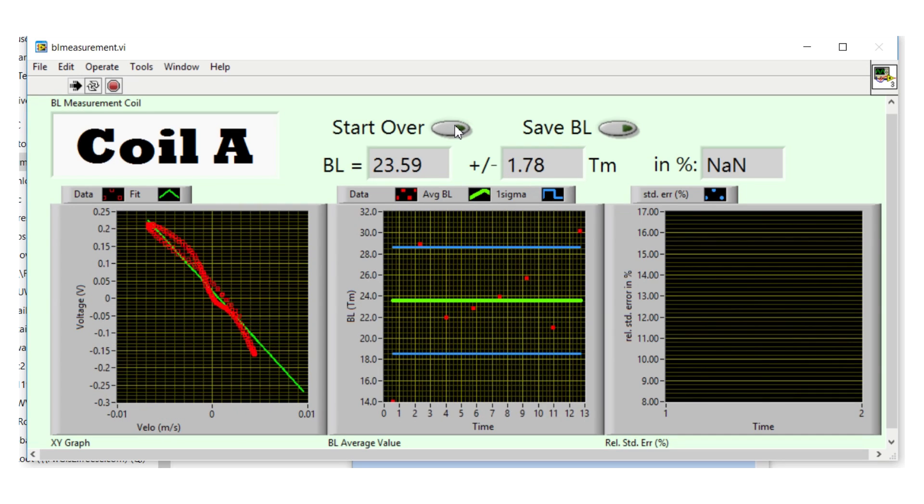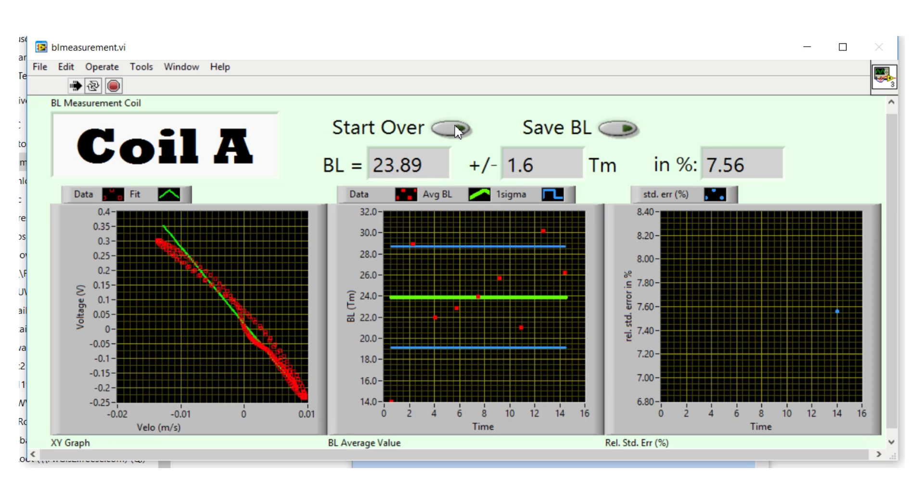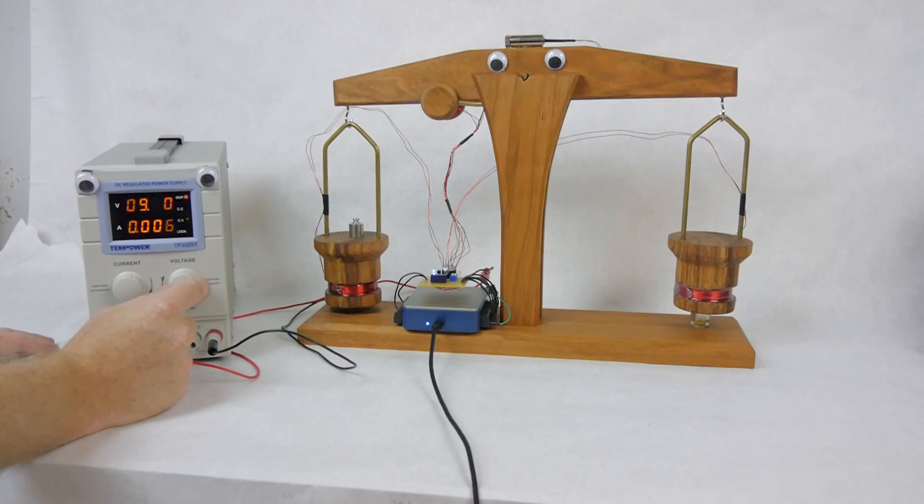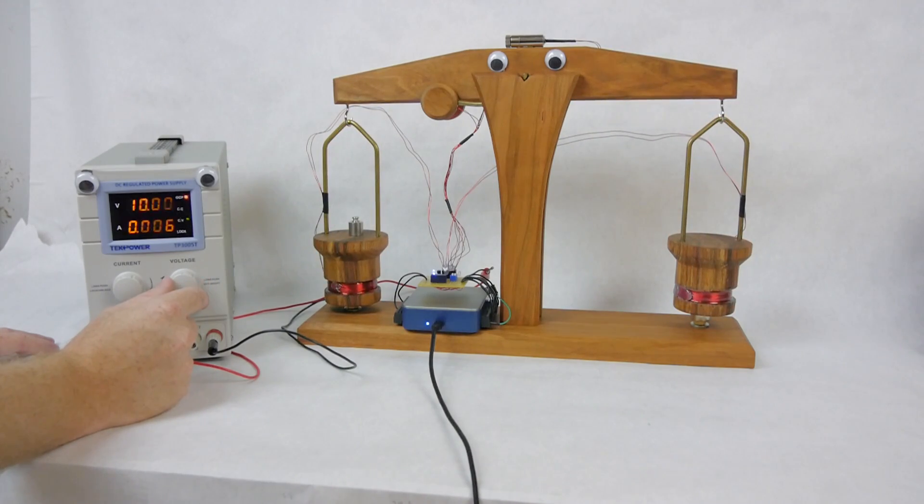And here's the most important part. Since voltage and current are defined in terms of fundamental physical constants, the watt balance makes it possible to define the kilogram in terms of these absolutes, eliminating the need for a physical artifact.